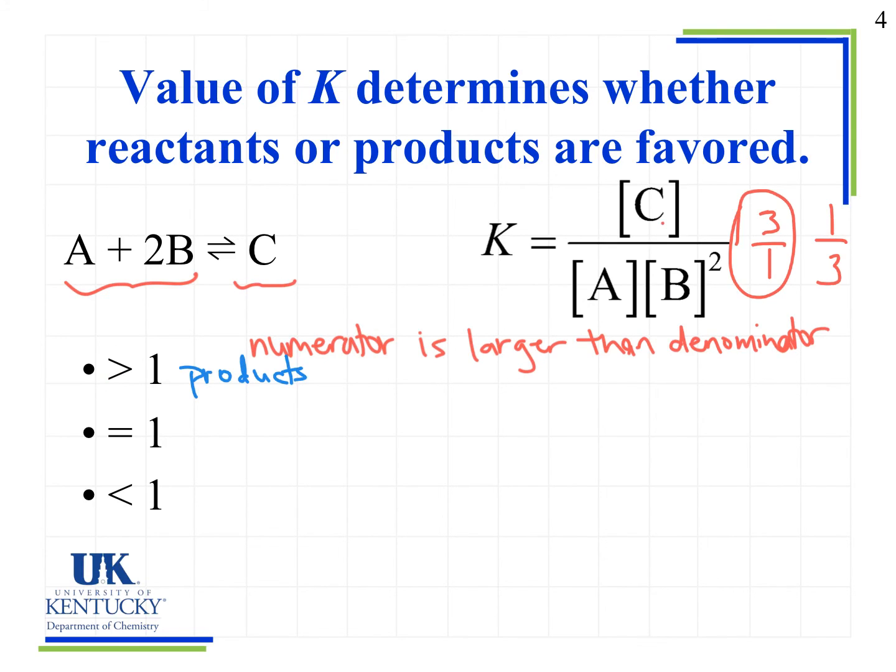Next, we look at approximately equal to 1. We show it here as an equal, but it's around 1. So anything really between 0 and 2 would be considered approximately 1. What we see is that at that point, we have roughly equal values on the numerator and denominator. So we have approximately equal concentrations of our substances. This doesn't happen very often. Typically, either the products or the reactants are favored.